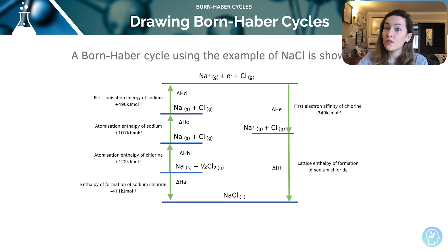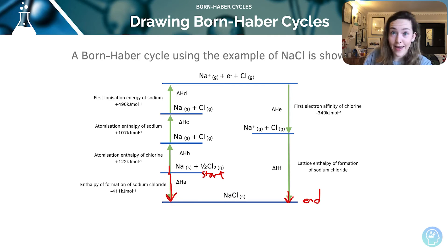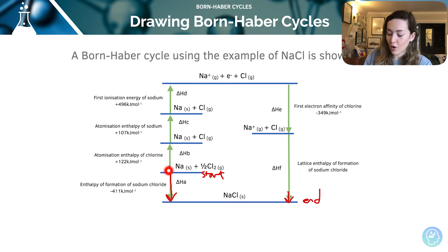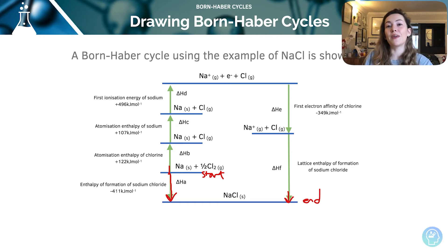Here's a Born-Haber Cycle using sodium chloride — so we've got the formation. Something I always do is identify where the start is, because two arrows are pointing away from it, and where the end is, because two arrows are pointing to it. So I've got a clear shortcut: I can either go from the start to the finish through the direct route, which is the enthalpy change of formation, with elements in their standard states forming one mole of compound, or I can take the long indirect route.